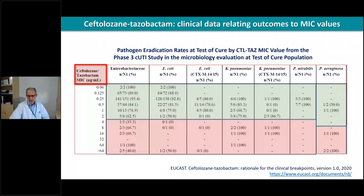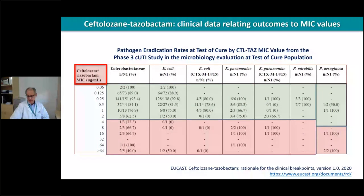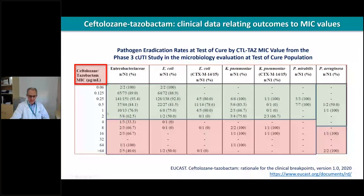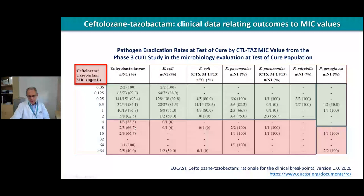This is the correlation of MICs with clinical outcomes — similar tables can be found in the rationale documents on the EUCAST webpage. With ceftolozane-tazobactam in complicated urinary tract infection, we plot the number of isolates with an eradication rate — test of cure — showing the percentage of cases with successful outcome. Resistant isolates and susceptible isolates are distinguished, and we expect clinical success with susceptible isolates and failure with resistant ones. Sometimes this is not perfect, probably because of variability in MIC determination and different patient characteristics.